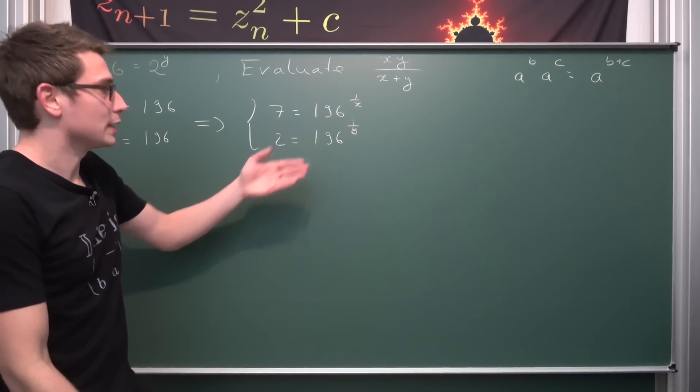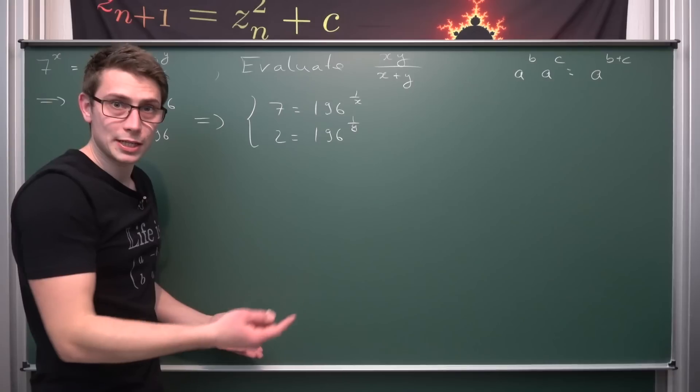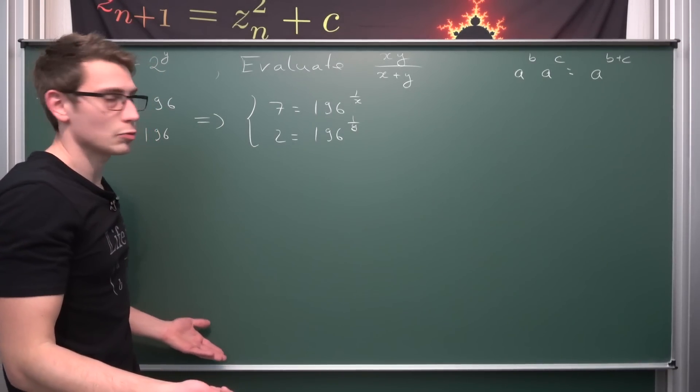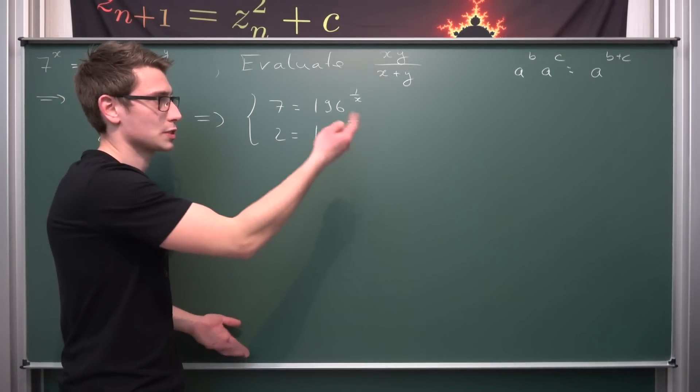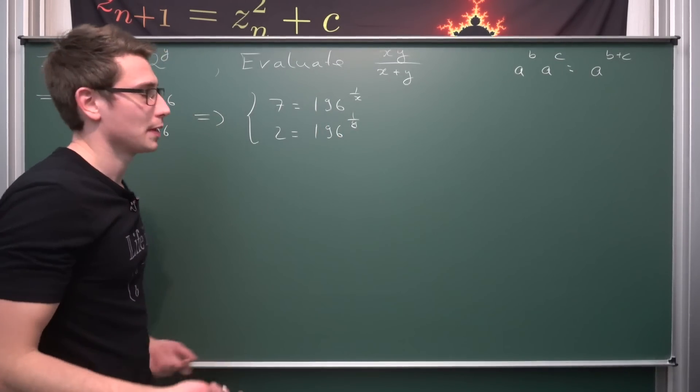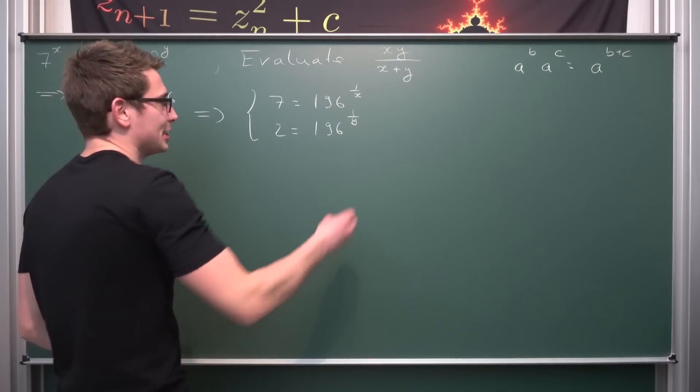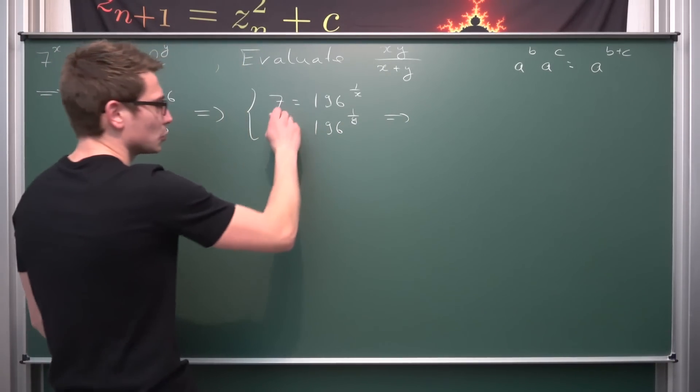What we can do is multiply these two equations together and then we are basically settled, because then we can take a look at the exponents and then we are basically done. So what we are going to do is multiply these together.